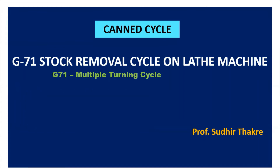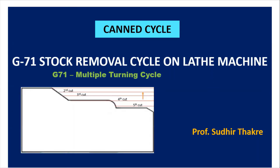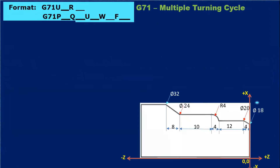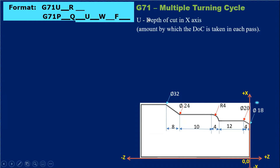Hello friends, today we'll see how to use the G71 stock removal canning cycle, basically used for OD turning on a lathe machine. G71 is also called a multiple turning cycle. Whenever we write the program in the canning cycle, it reduces the length of the program. I've shown one job here, so we'll write the program for it in G71. There is a fixed standard format for G71, which I will explain — each alphabet in the format has a specific meaning, and G71 consists of two blocks.